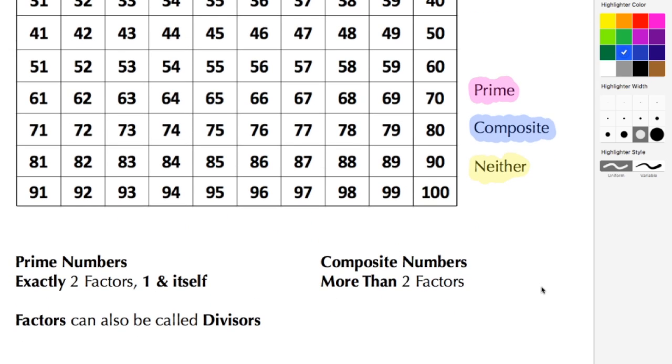Let's take a look at some definitions. A prime number is a number that has exactly two factors, those factors being 1 and itself. A composite number is a number that has more than two factors.